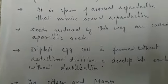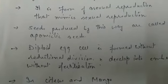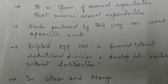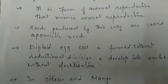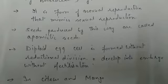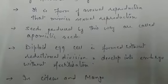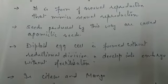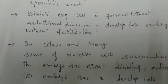Now, how are these apomictic seeds produced? Sometimes the diploid egg — the megaspore mother cell — will not undergo reductional division, meaning meiosis does not occur, and the egg remains diploid. This diploid egg then directly develops into an embryo without fertilization. This is how apomictic seeds are formed.